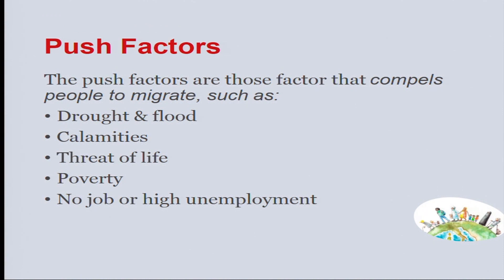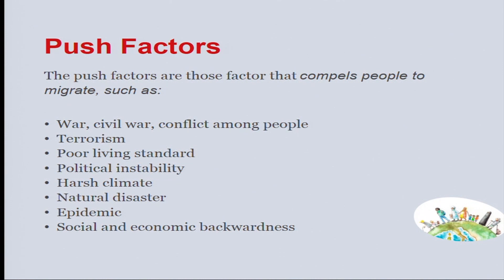The reasons can be drought. When we saw the map, we saw places prone to drought being hotspots of migration — like the Ramanathapuram district, Rajasthan marked in deep red, and Gujarat. Drought, floods, calamities, threat to life, constant war, conflict, poverty, no job or high unemployment, agriculture fails, there is no proper yield, no money to run the family, civil war, conflict among people — an example would be the Sri Lankan war, because of which people left the country and are refugees in India and in many other countries across the world.